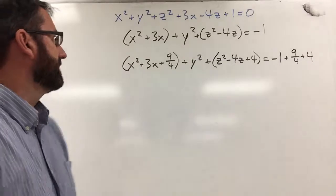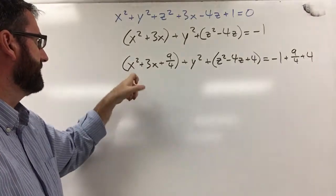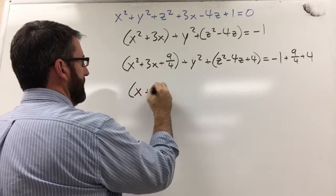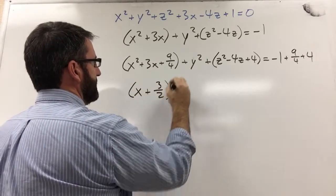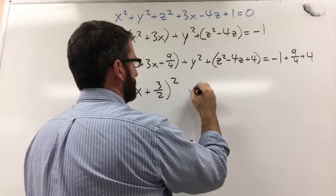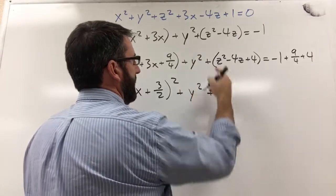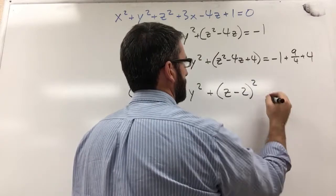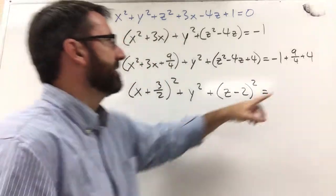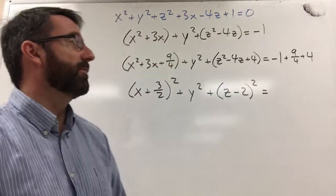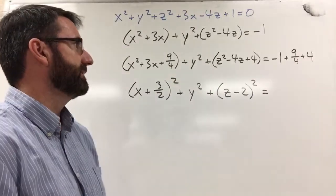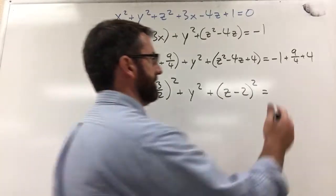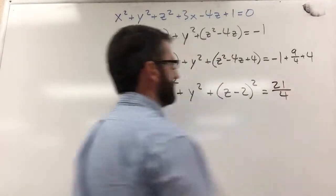Now let's clean this up. We can factor this as x plus 3 halves squared. This is just y squared. And then this one is going to be z minus 2 squared. And then on the other side, 4 minus 1 is 3, which is 12 fourths plus 9 fourths is 21 fourths.